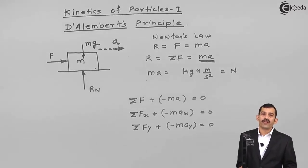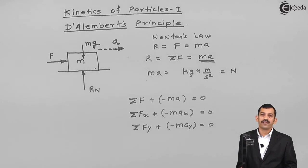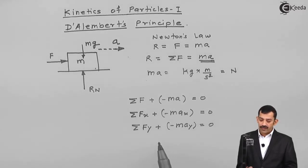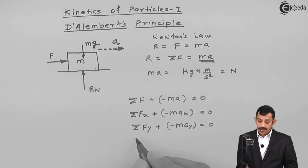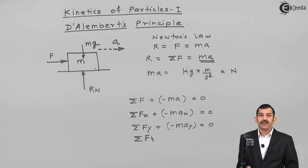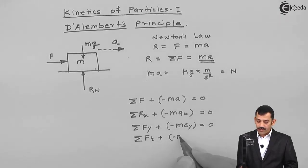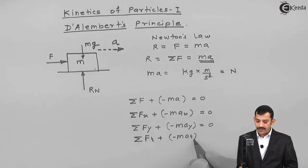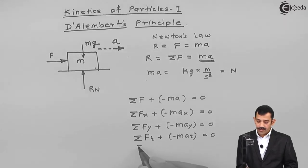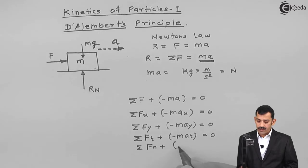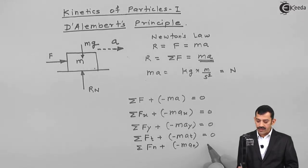Similar equations are possible for curvilinear motion. In curvilinear motion when a body of mass m accelerates, you get a resultant acceleration which is the resultant of the normal component of acceleration and the tangential component of acceleration. Along the tangent: summation of forces along tangent minus m times at equals zero. Along the normal: summation of forces along normal minus m times an equals zero.